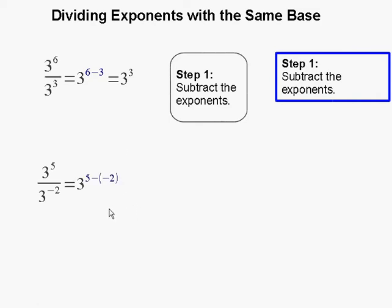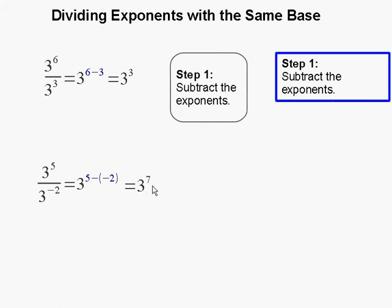Let's do another example. Here we have 3 to the 5th divided by 3 to the negative 2. So we are going to subtract the two exponents: 5 minus negative 2. Don't forget that subtracting a negative results in addition, so this becomes 5 plus 2, and that gets you 7. So 3 to the 5th divided by 3 to the negative 2 results in 3 to the 7th power, and this completes our problem.